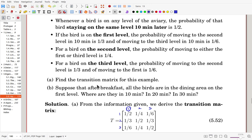Find the transition matrix for this example. We found here. Suppose that, after breakfast, all the birds are in the dining area on the first level. where are they in 10 minutes, in 20 minutes, and 30 minutes.